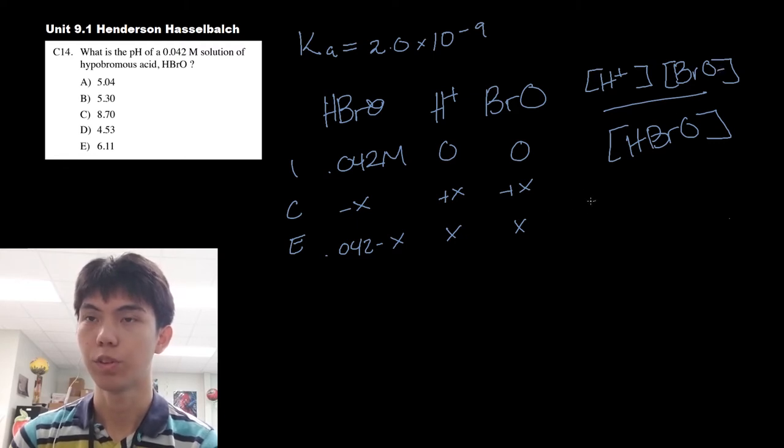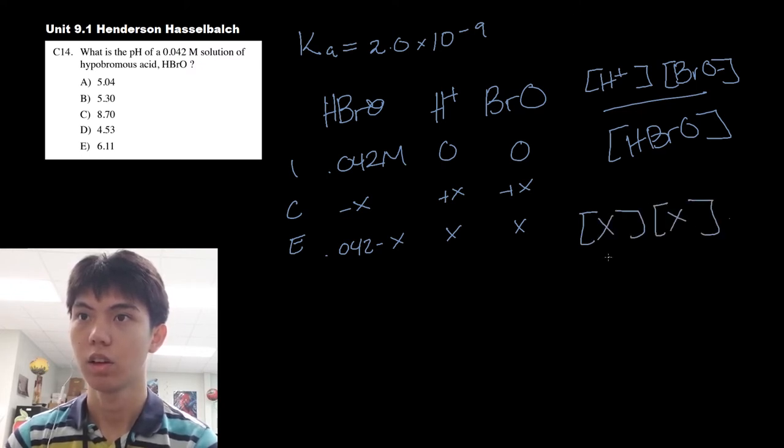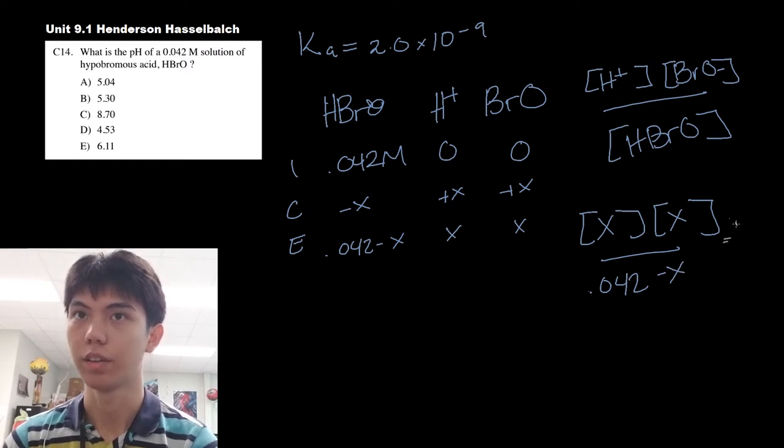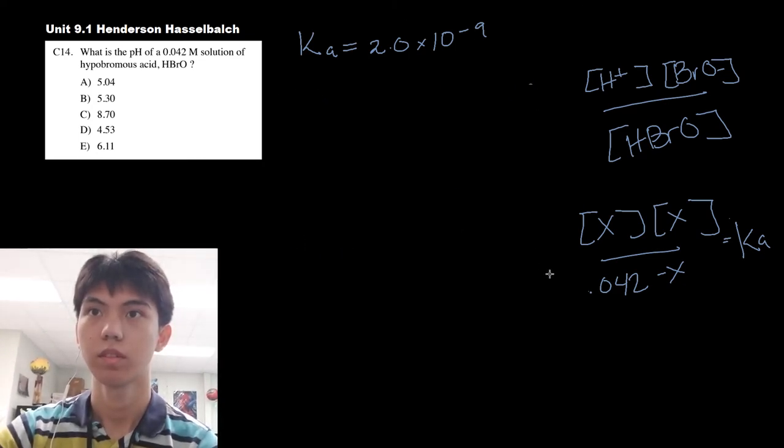Since we already know all of this, we can set it up as x times x over 0.042 minus x, and this should equal your Ka.